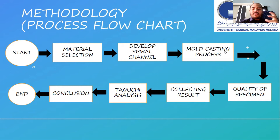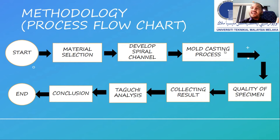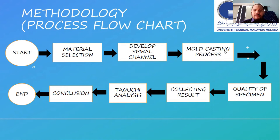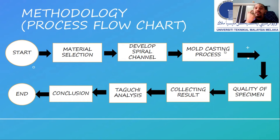After collecting results, we develop the Taguchi optimization analysis — a simple method that provides a suitable result. After running eight times of tests on the mold casting process and completing the Taguchi analysis, we conclude which is the better parameter for producing the non-dendritic microstructure — specifically, which temperature, which angle, and which spiral length gives the best result.